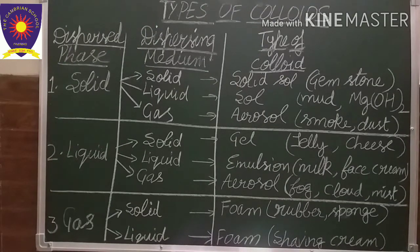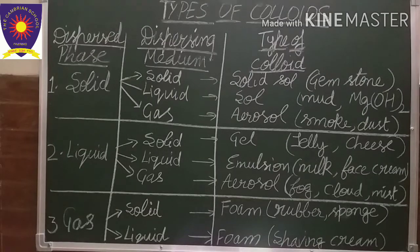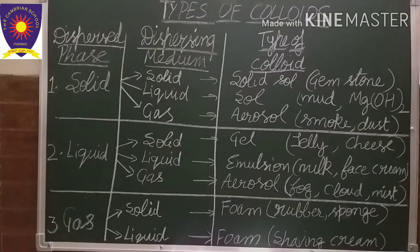Secondly, when liquid is dispersed in liquid — that is, both the dispersed phase and the dispersing medium are liquids — that type of colloid is known as an emulsion. Examples are milk and face cream.